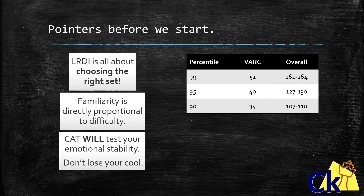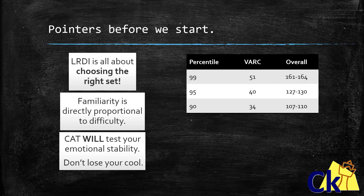However, usually in each CAT paper there will be one very weird question — be it related to chess or a weird graph that you have to decipher. Usually these weird questions are the easy ones. CAT will test your emotional stability, so don't lose your cool. In LRDI especially, if you waste time on certain questions you tend to become emotionally unstable and make a couple of other wrong decisions as well. Also, because a calculator is provided, the difference between DI and LR has reduced — even data-intensive sets end up having logical reasoning in them, as you can see from previous year papers.